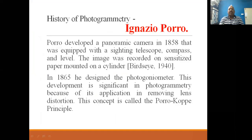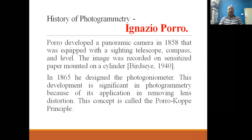Ferrer developed a panoramic camera in 1858 equipped with a sighting telescope, compass, and level — three instruments combined. The telescope was used to observe objects, the compass for angle measurements, and the leveling instrument to find levels. The image was recorded on sensitized paper mounted on a cylinder. In 1865, he designed the photogoniometer. This development is significant in photogrammetry because of its application in removing lens distortion, a concept called the Porro-copy principle.